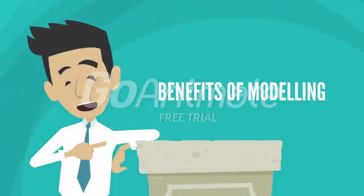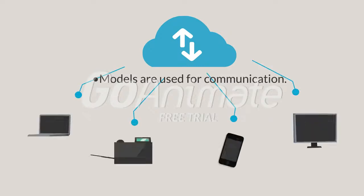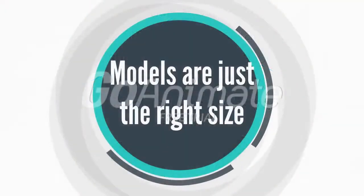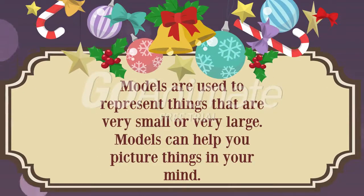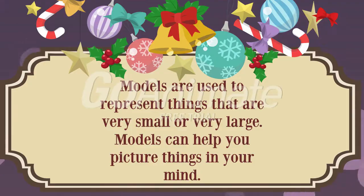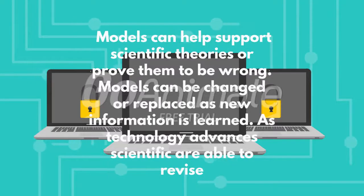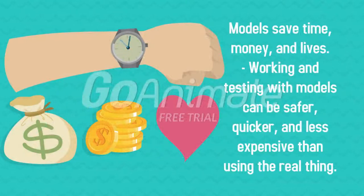Next, we will talk about the benefits of modeling. The first benefit of modeling is for communication. Models are used to communicate observations and ideas to other people. Models help people visualize ideas or abstract concepts. The second benefit of modeling is just the right size. Models are used to represent things that are very small or very large, and can help you picture things in your mind. The next benefit is that models build scientific knowledge. Models can be used to help illustrate and explain scientific theories, and can help support scientific theories or prove them to be wrong, or change and replace them. Other than that, models save time, money, and lives.